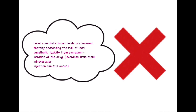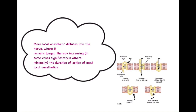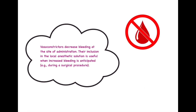However, overdose from rapid intravascular injection can still occur, so we need slow administration of the local anesthetic whenever injecting it. The fourth function of adrenaline is that it helps the local anesthetic solution diffuse into the nerve, where it will remain for a longer period of time, thereby increasing the duration of action. By limiting the anesthesia at a particular tissue or site, it increases the duration of action and prevents redistribution of the drug, which naturally also increases the duration of action of most local anesthetics.